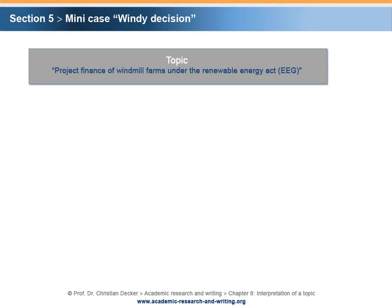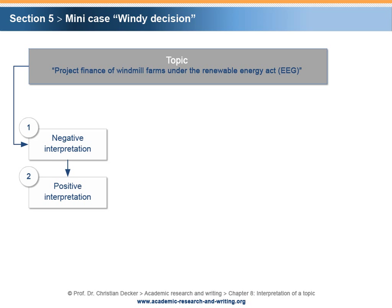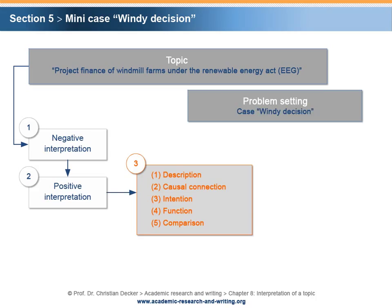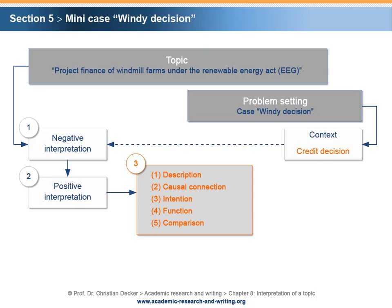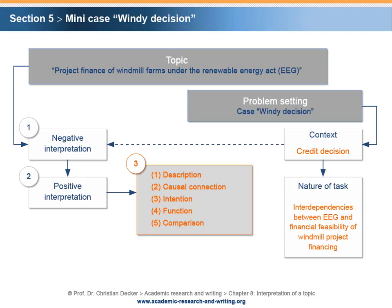The inherent topic of the Mini Case Windy Decision is Project Finance of Windmill Farms under the Renewable Energy Act. The three process steps of interpretation are laid out: negative interpretation, positive interpretation, and finally the selection of a name. In this case, the problem setting is known. The Mini Case Windy Decision provides information with respect to the context, which is the credit decision to be made by the local bank. In order to come up with a credit decision, the executive committee needs more information regarding the interdependencies between the EEG and financial feasibility of windmill project financing. This leads to the conclusion that a functional research aim is appropriate, which analyzes the functional relation between the German EEG on the one hand and the financial feasibility of windmill project financing on the other hand.